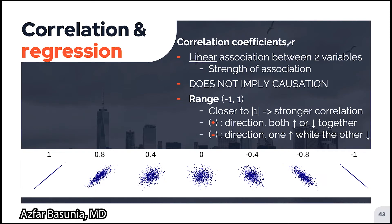The correlation coefficient, denoted by R, describes the linear association between two variables — the word linear is very important here, as it measures the strength of association. As you've likely heard, correlation does not imply causation. Values of R range from −1 to 1; the closer the magnitude of R is to 1, the stronger the correlation. The sign indicates direction: a positive R means both variables increase or decrease together, while a negative R means when one variable increases, the other decreases.